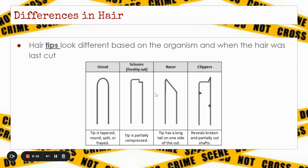We can also look at the hair tips to determine when the hair was last cut. If it's rounded, it's an uncut hair. Scissors would leave a straight edge, possibly with a little notch. A razor is going to leave more of a slant. Clippers are going to be flat, maybe with some other jagged parts as well.